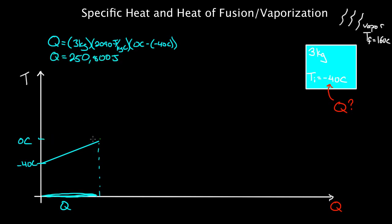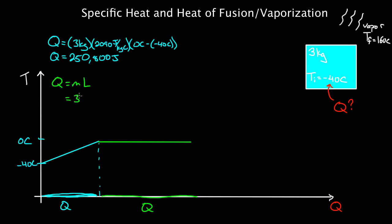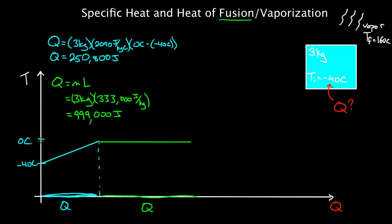Now we need to melt it. What does the graph look like while it melts? The temperature stays constant — as you're melting the ice, all that energy goes into breaking bonds and turning ice into water. This is a phase change, so we use Q equals ML. M is three kilograms, and we use the latent heat of fusion — not vaporization — because a solid is turning into a liquid. The latent heat of fusion for water is about 333,000 joules per kilogram, which gives 999,000 joules to turn ice at zero degrees Celsius into water at zero degrees Celsius.